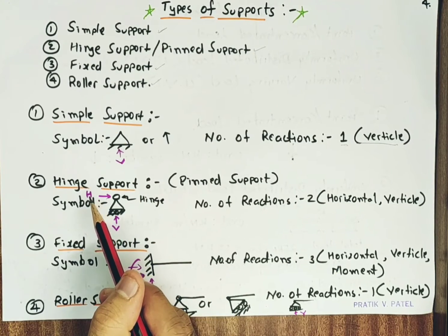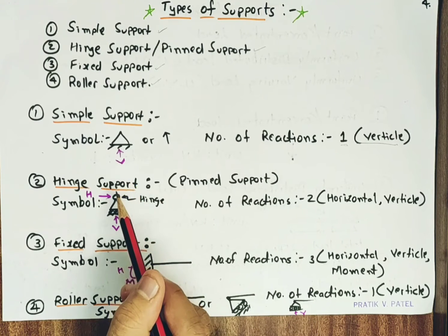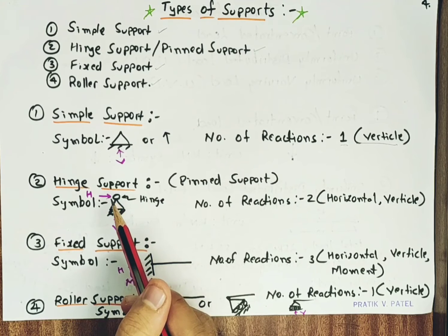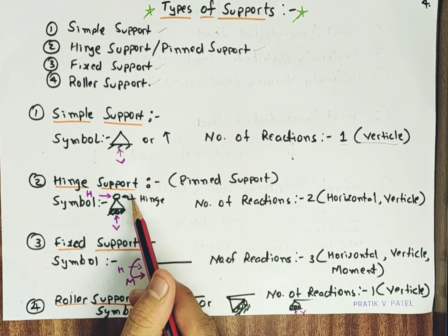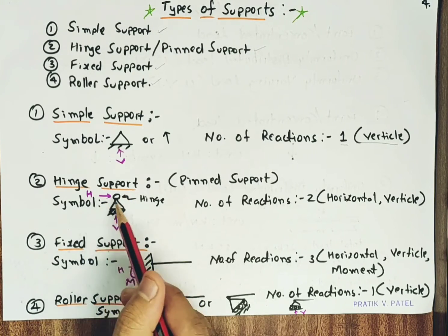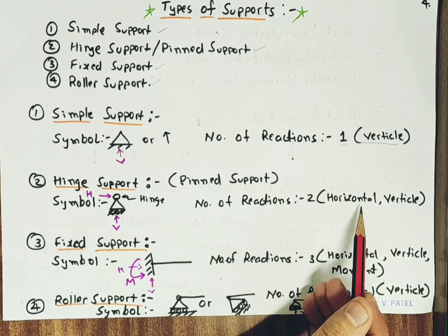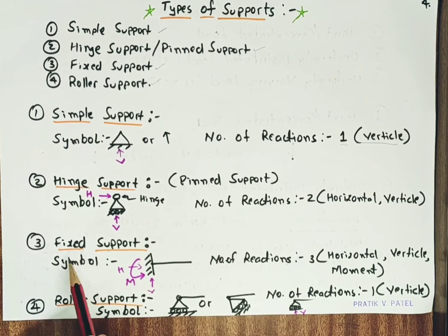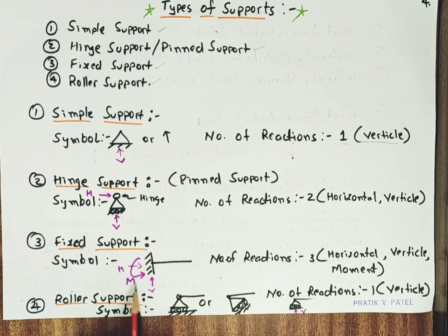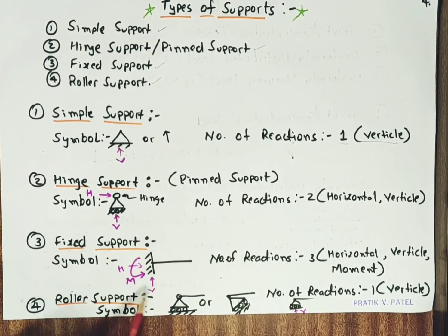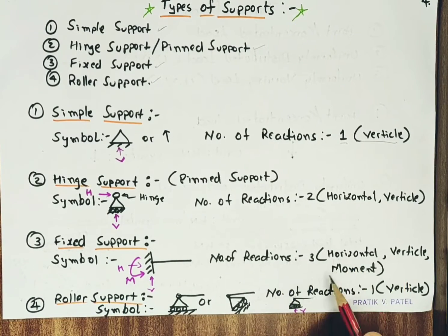For hinge support, the beam is hinged to the support at its end. The beam can rotate about the hinge, while vertical and horizontal reactions are developed. This type of support is like that provided at a door edge — the door is able to rotate but cannot move in the horizontal or vertical direction. So the number of reactions is 2: horizontal and vertical. For fixed support, the beam is rigidly fixed and is not allowed to rotate nor move in any direction. The number of reactions is 3: vertical reaction, horizontal reaction, and moment.